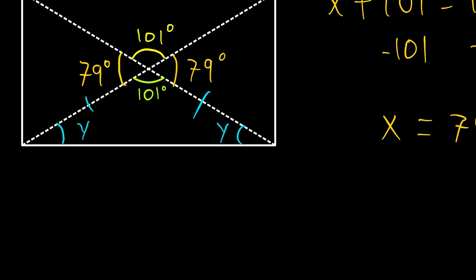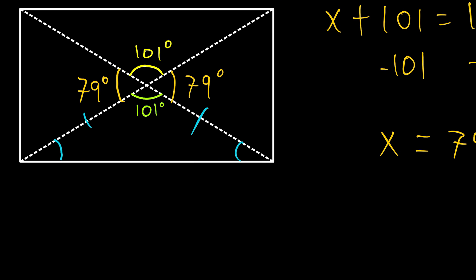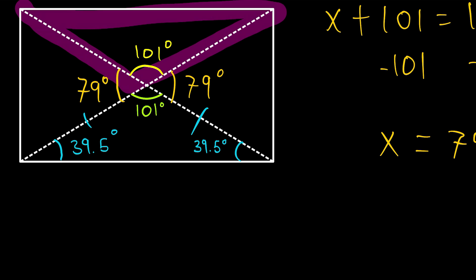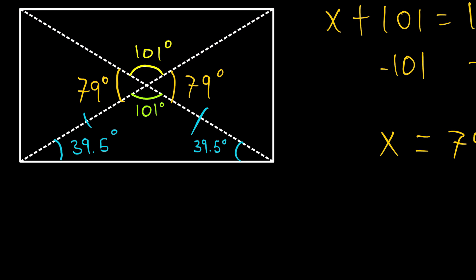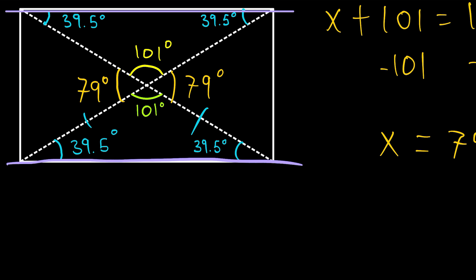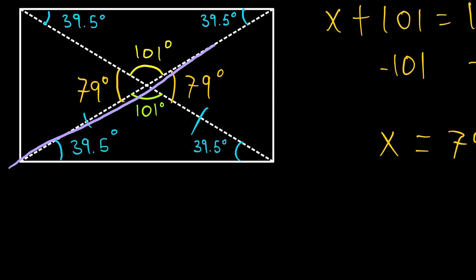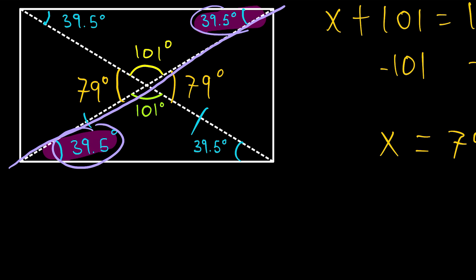We can replace our y's with 39.5 degrees. The same logic applies to the triangle on the other side — in fact, they are congruent triangles, so those two angles also have the same measure of 39.5. Another way to see that is that the opposite sides of a rectangle are parallel, so with this diagonal we have alternate interior angles, and when parallel lines are cut by a transversal, alternate interior angles are congruent.